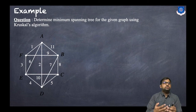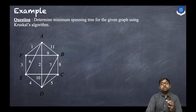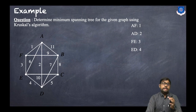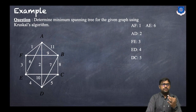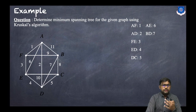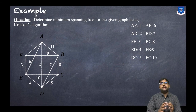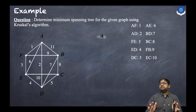First, we arrange all the edges in increasing order of their weights. The edge with minimum weight is AF, with weight 1. Then AD with weight 2, FE with weight 3, ED with weight 4, DC with weight 5, AE with weight 6, BD with weight 7, BC with weight 8, FB with weight 9, and finally EC with weight 10. We have listed all edges in increasing order.